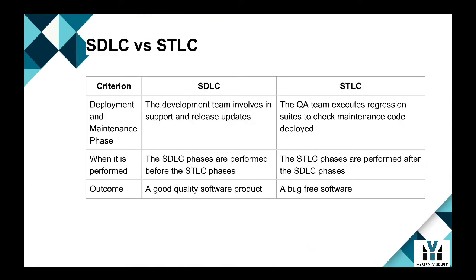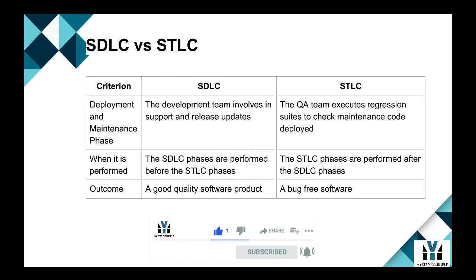Deployment and maintenance phase: In SDLC, the development team involves support and release updates. Whereas in STLC, the QA team executes regression suites to check maintenance code deployed. When it is performed: the SDLC phases are performed before the STLC phases, and the STLC phases are performed after the SDLC phases. Outcome: SDLC produces a good quality software product, and STLC produces bug-free software.